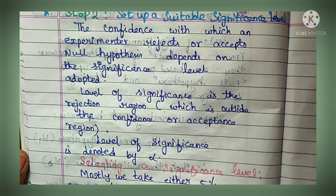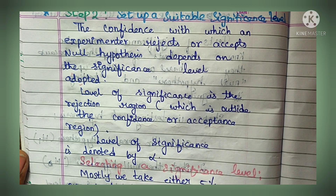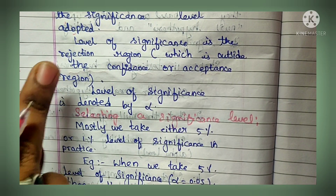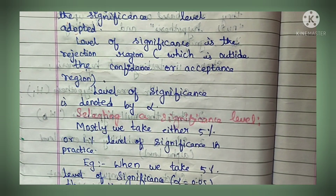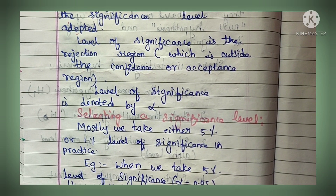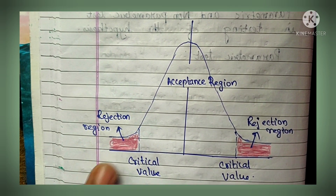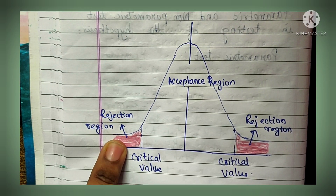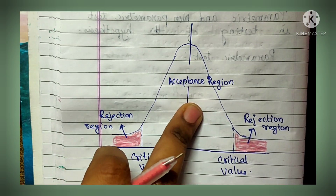Moving on to step two - set up a suitable significance level. The confidence with which a researcher rejects or accepts a null hypothesis depends on the significance level adopted, represented by the symbol alpha. The level of significance is the rejection region, which is outside the confidence or acceptance region. In the diagram, the red shaded portion is the rejection region and the middle portion is the acceptance region. If the critical value falls in the rejection region, the null hypothesis is rejected; if it falls in the acceptance region, the null hypothesis is accepted.